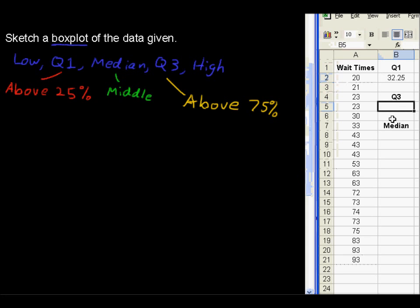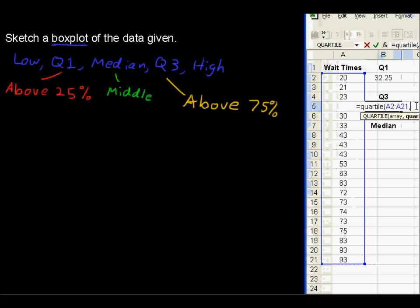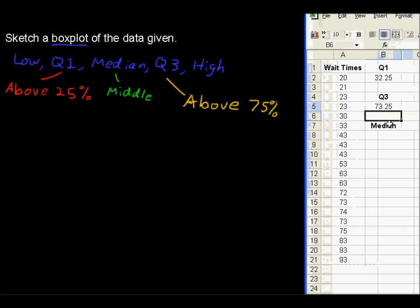For the third quartile, I'm going to type it in this time, equals quartile, and then open up the parentheses, and then choose all of this data, and then hit comma, let's just move this over so you can see this, hit comma, and then three. And Excel is pretty nice about telling you what it wants there. Close the parentheses, so we're getting the third quartile here, 73.25.